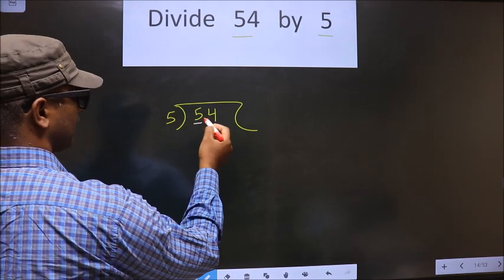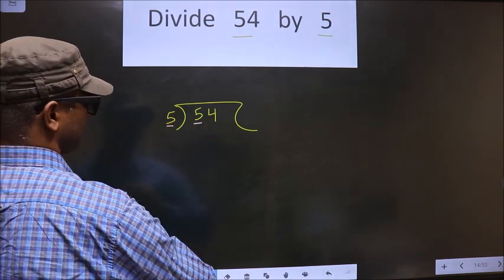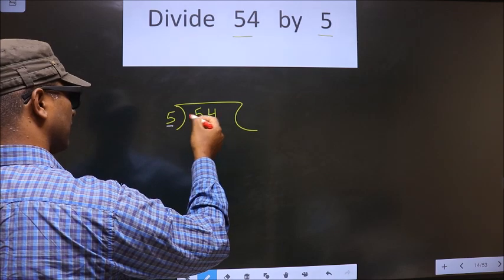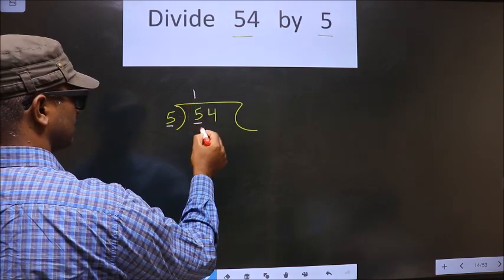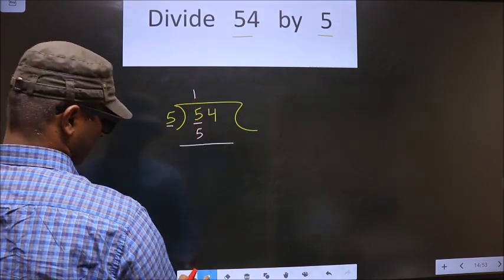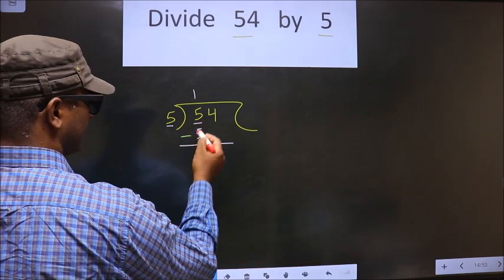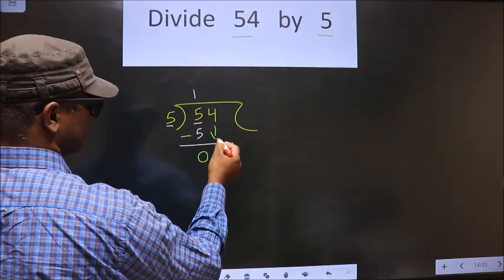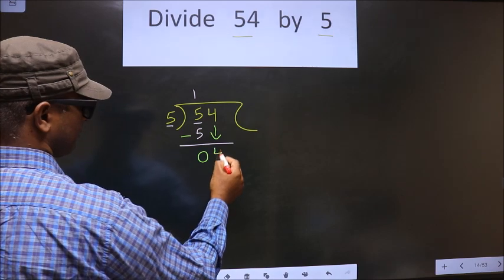Now here we have 5. Here also we have 5. When do we get 5 in the 5 table? 5 once is 5. Now you subtract, you get 0. Now you bring this number down, that is 4.